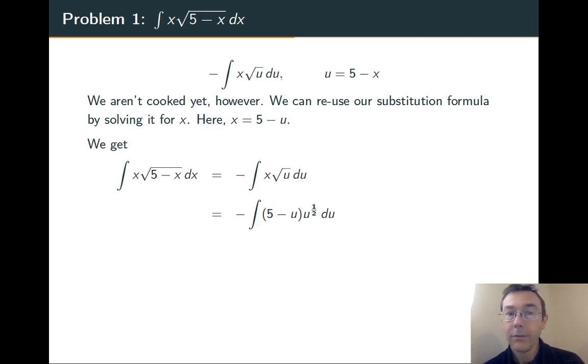We get negative the integral of 5 minus u times the square root of u, u to the 1 half, du. This we can integrate. We foil it out and anti-differentiate by raising up those exponents and multiplying by the reciprocals of the new exponents.